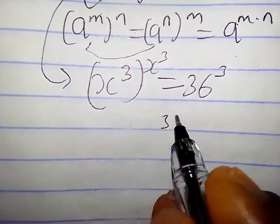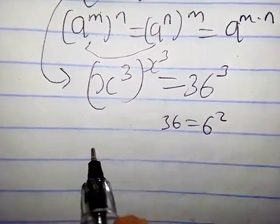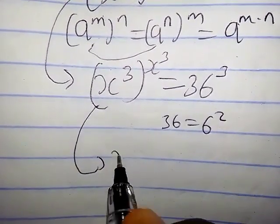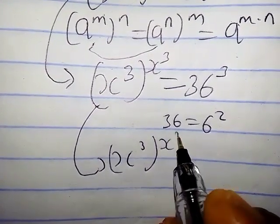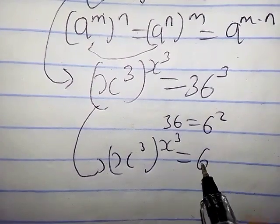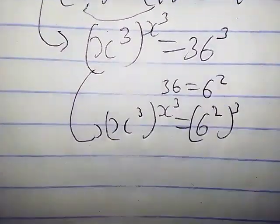The next step is that this can be written as 6 square, so we are going to replace this with 6 square here. This implies x raised to power 3 raised to power s cube equals what that would be 6 square times 3, which gives x raised to power 3 raised to power s cube equals 6 raised to power 6.